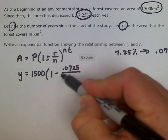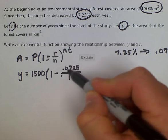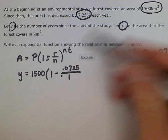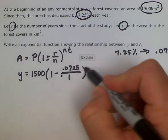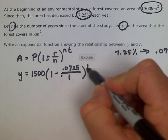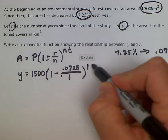Okay so this 0.0725 over 1 is just going to be equal to 0.0725. And then it's raised to the number of times it's compounded which is just going to be once a year and then to the letter t.